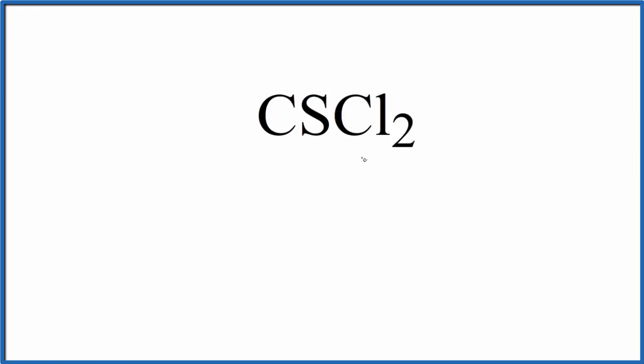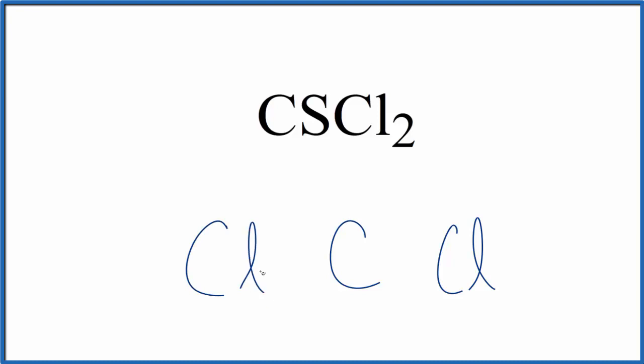To start off, let's put the least electronegative element in the center. That's going to be the carbon, and then let's put a chlorine — we have two of them — on either side, and then the sulfur on the top.